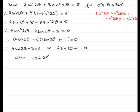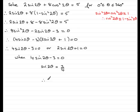Starting with 4sin(2θ) − 3 = 0: rearranging gives sin(2θ) = 3/4. Taking the inverse sine of both sides: 2θ = sin⁻¹(3/4).